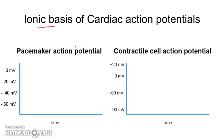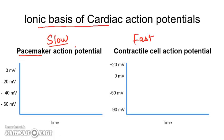This video is about the ionic basis of cardiac action potentials. There are two types: one is a slow response type and the other is a fast response type. The slow response type is seen in the pacemaker cells, while the fast response is seen in contractile cells like atrial and ventricular cardiomyocytes.